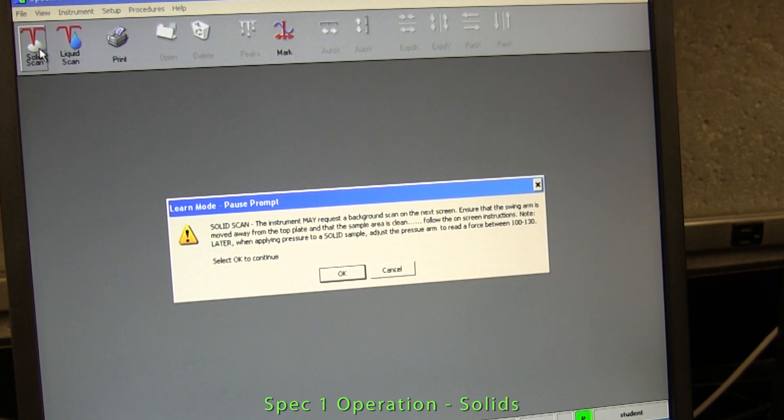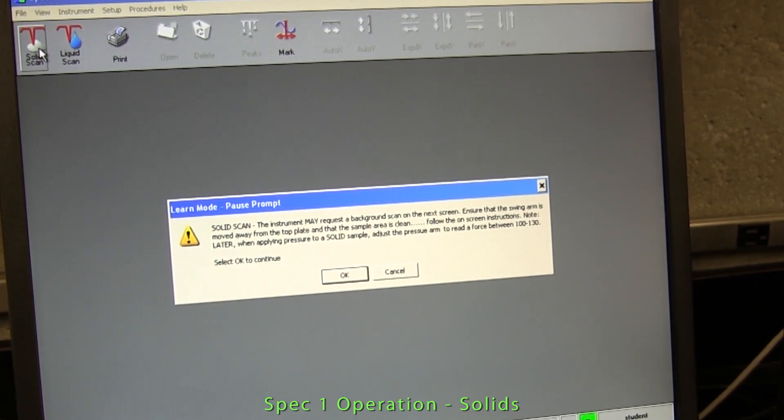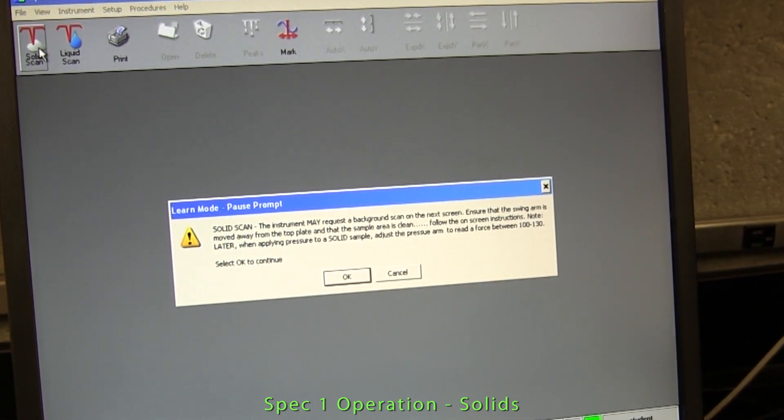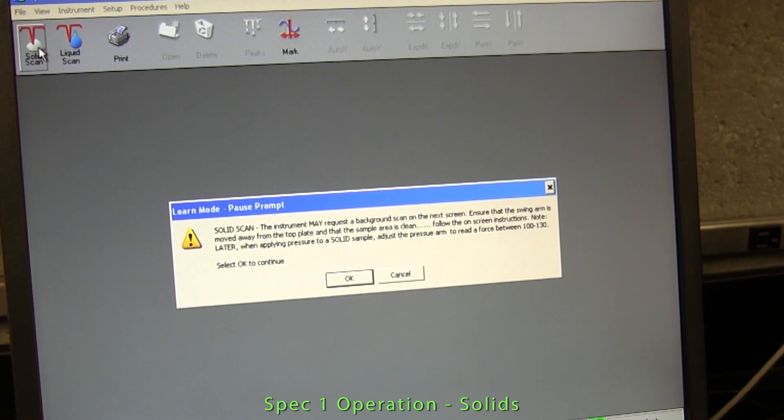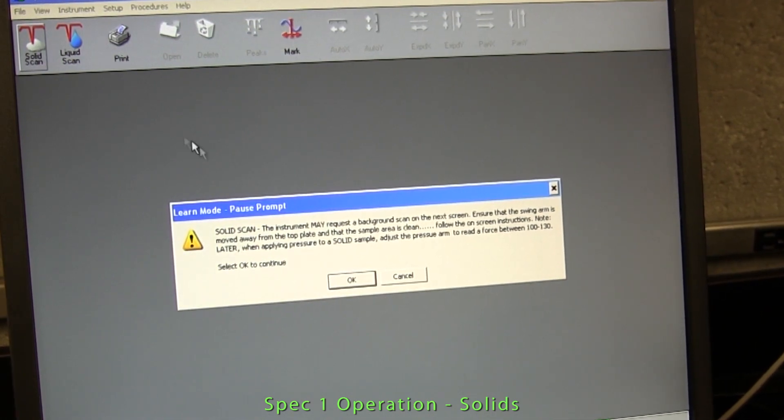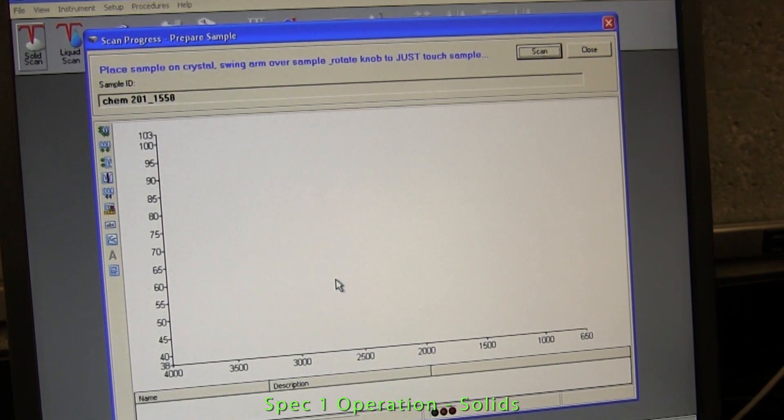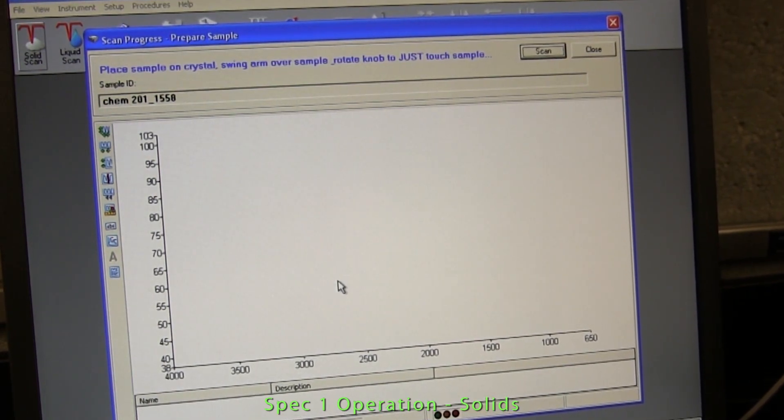So if someone else has used the instrument recently, it will use the already stored background spectrum. Just follow the on-screen prompt. Assuming that the background spectrum has already been stored, you will then be prompted to scan your sample.